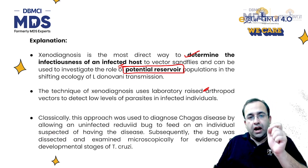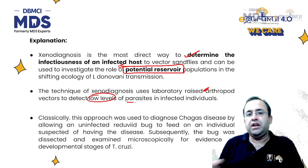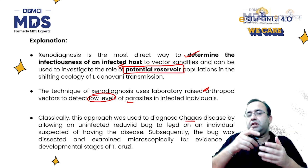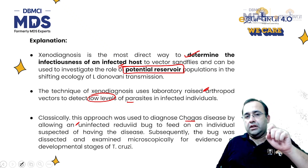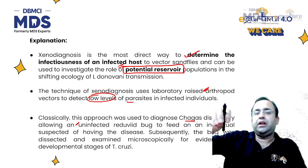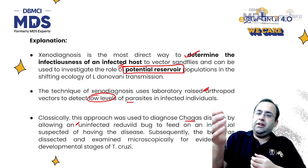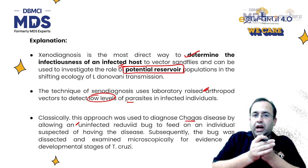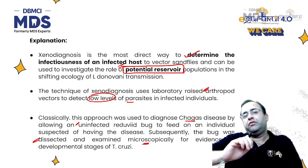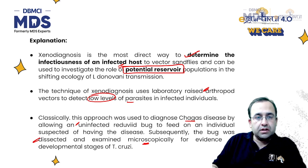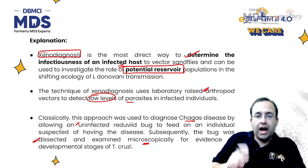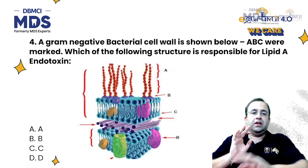In xenodiagnosis, lab-raised arthropod vectors are used to detect low levels of parasite in infective individuals. This was classically used for Chagas disease, in which an uninfected Reduvid bug — a lab-grown organism — was used to feed on an individual suspected of having Chagas. The bug was then dissected and examined microscopically for evidence of Trypanosoma cruzi. This method is used to detect infectiousness of an infected host and to investigate the role of potential reservoirs.